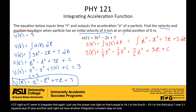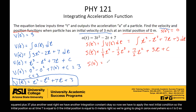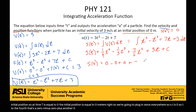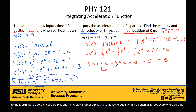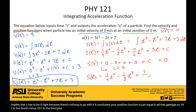Now we have to apply the next initial condition. The initial position: at time t equals 0, the initial position is equal to 0 meters. So we plug in 0s everywhere: t to the fourth is 0, minus 0, plus 0, plus 0, plus C — all that has to equal 0. That implies C has to be 0. So to conclude, the position function is one-fourth t to the fourth minus one-third t cubed plus 7 over 2 t squared plus 3t, with no plus C since it was 0.